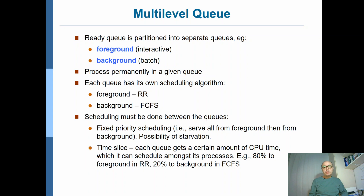As mentioned in the previous video, round robin is a scheduling algorithm of choice in most operating systems because it provides a very good response time for interactive processes. But in an operating system, besides interactive processes, you also have batch processes — processes that should be executed in the background — and you should be utilizing those to keep the CPU busy. Because the type of processes varies, you cannot pick one scheduling algorithm and say this is the best for all processes. That's why we come up with the idea of multi-level queues.